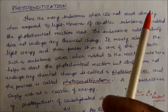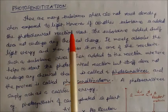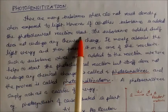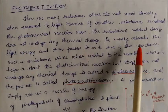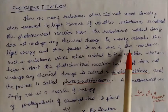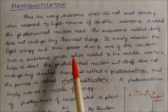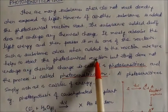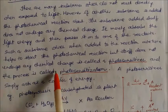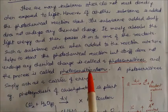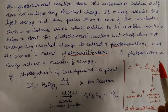Photosensitization: many substances do not react directly when exposed to sunlight. However, if another substance is added, the photochemical reaction starts. This added substance does not undergo any chemical change itself — it merely absorbs the light energy and passes it on to one of the reactants, helping to start the photochemical reaction. Such a substance is called a photosensitizer and the whole process is called photosensitization. A photosensitizer simply acts as a carrier of energy.